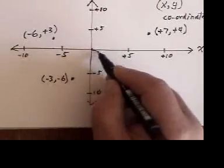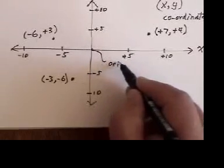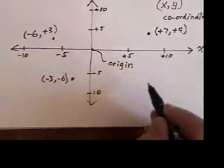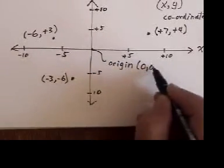This original point, we call the origin. And its coordinates are 0, 0.